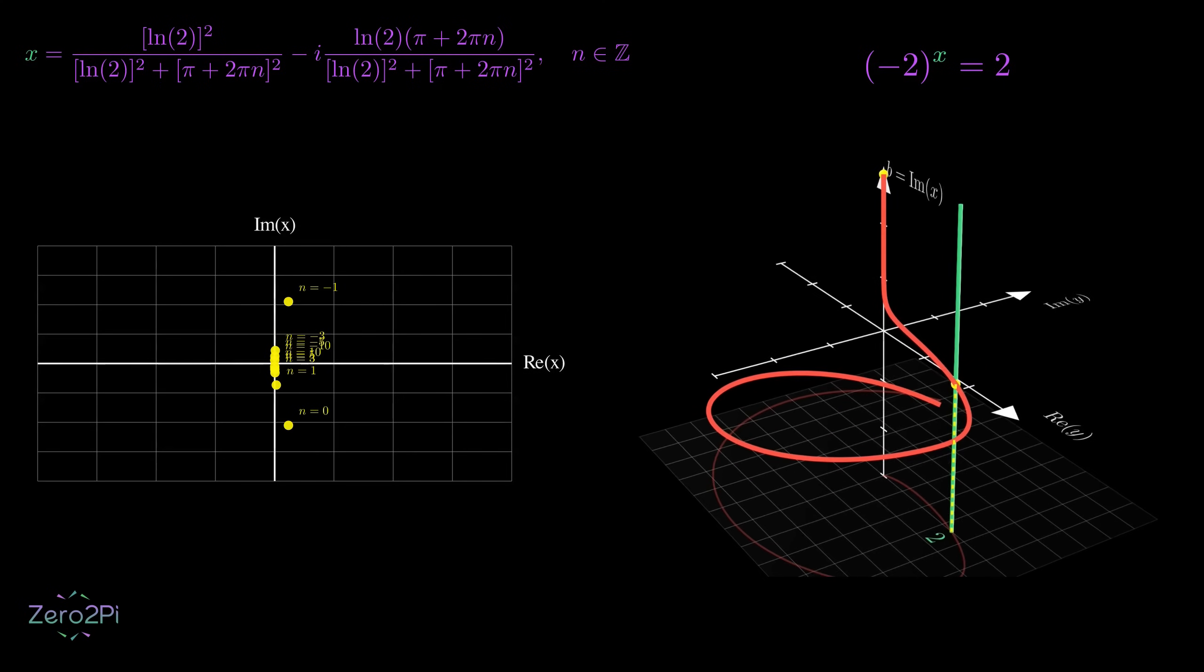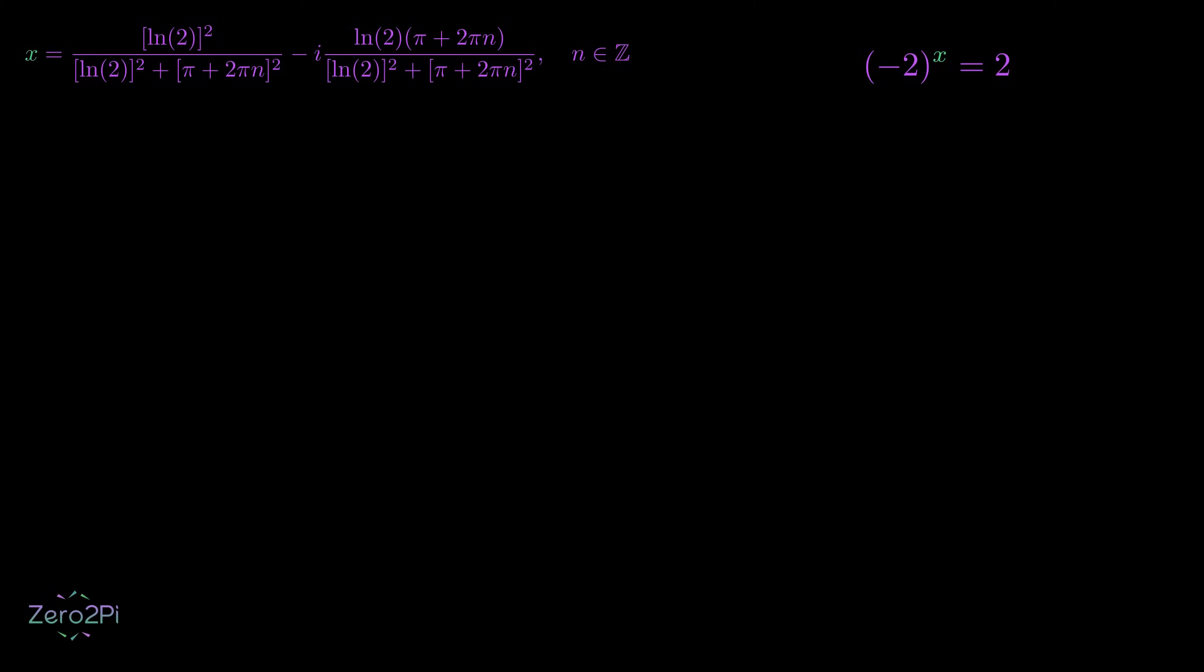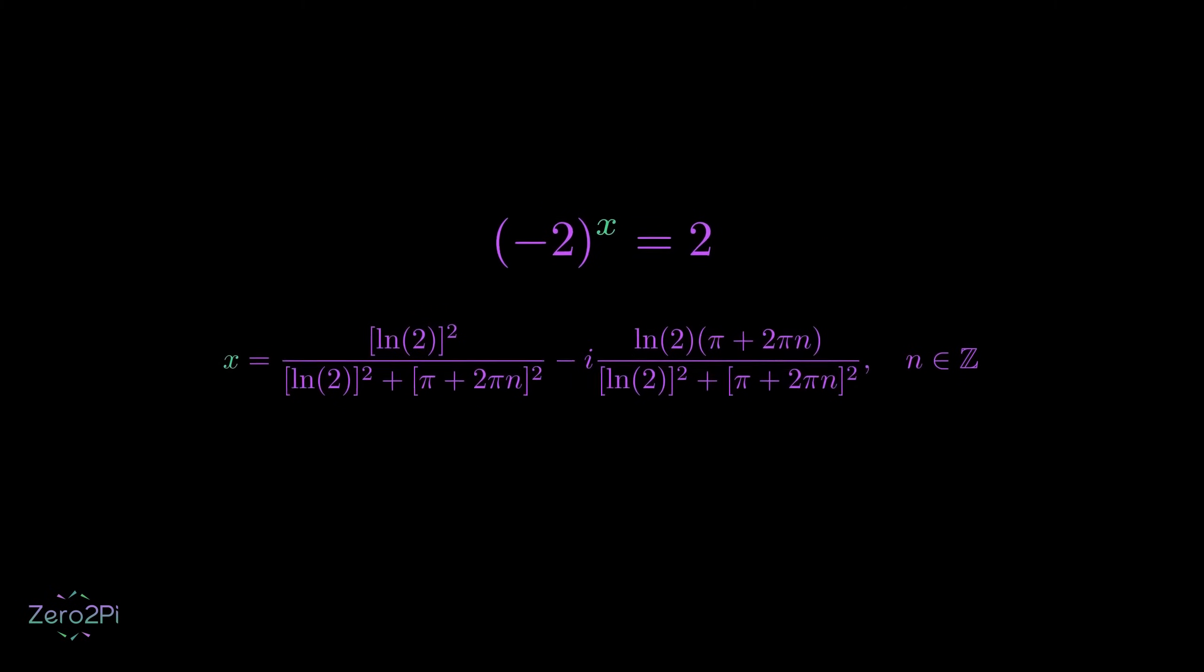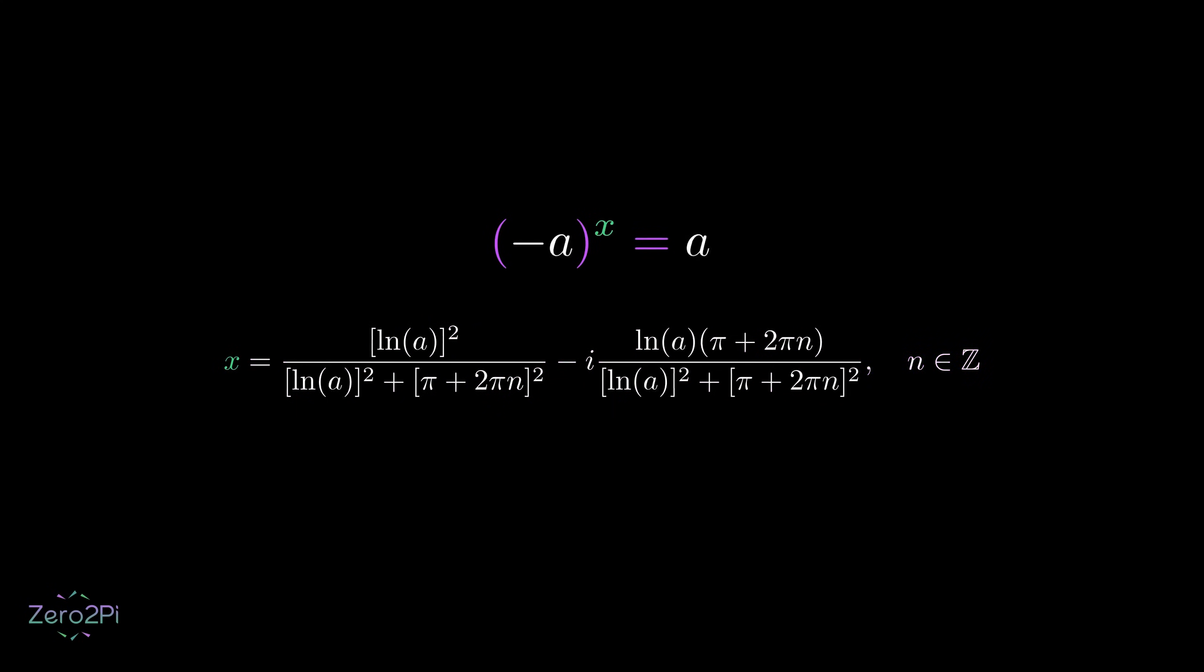This same pattern works for any positive number. If we change our equation to negative 3 to the power x equals 3, or negative 4 to the power x equals 4, we get the same type of solution, just with different numbers.